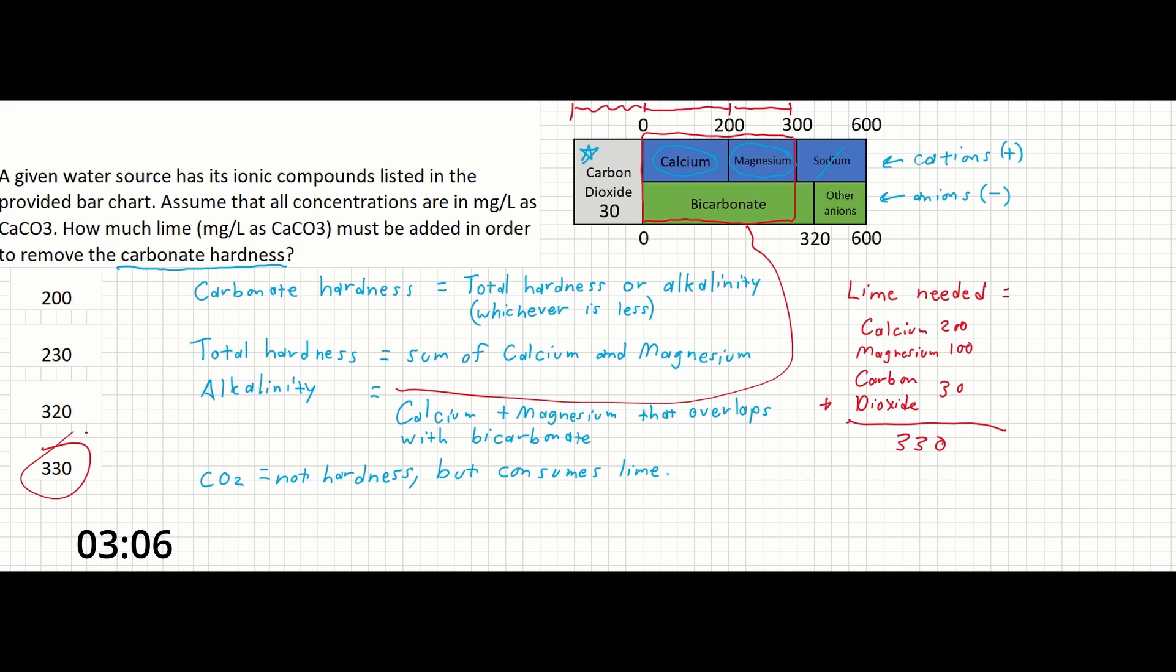Here are how you could have gotten to some of the incorrect answers instead. You might select 200 if you think that calcium is the only cation that contributes to the lime requirement. You might select 230 if you think that calcium and carbon dioxide are the only two contributors to the lime requirement.